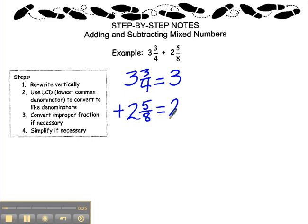Always rewrite your whole numbers. It's very common to forget your whole numbers, so rewrite them each time. 5 eighths will remain 5 eighths, but 3 fourths will become 6 eighths.